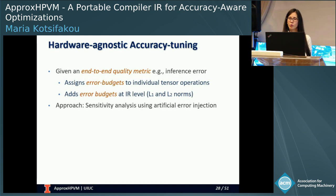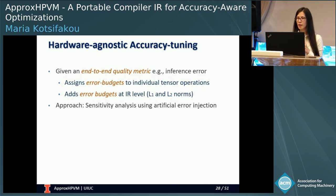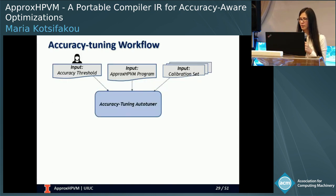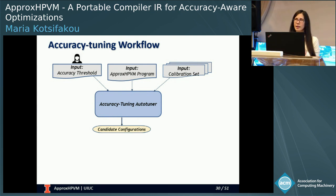Now let's look at the accuracy tuning phase. Given the end-to-end quality metrics provided by the user, this phase assigns error budgets to the individual tensor operations and adds this budget at the IR level. The inputs to this phase are the ApproxHPVM program, the threshold provided by the user, and a set of inputs with which to execute the program, which we call the calibration set.